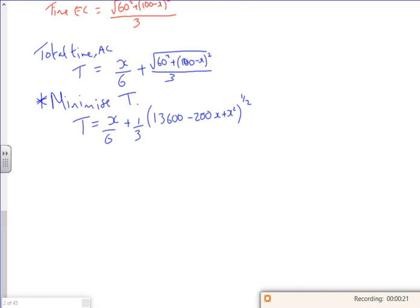So I've got to here now, I need to minimize this. So I'm going to minimize this, so it's dT/dx. So the x over 6 just becomes 1 over 6.